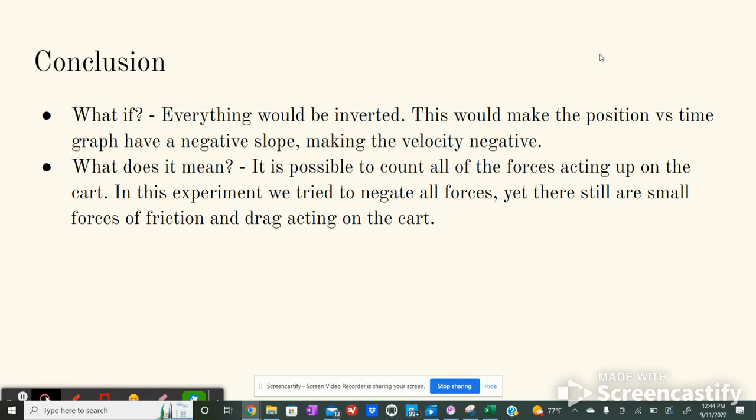In conclusion, what if. If it's answered the what if question, everything would be inverted if you swap the positive and negative x's because this would make the position versus time graph have a negative slope, therefore making the velocity negative because you'd be looking at the data in a reverse way.